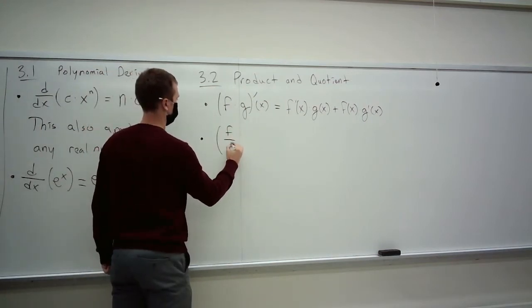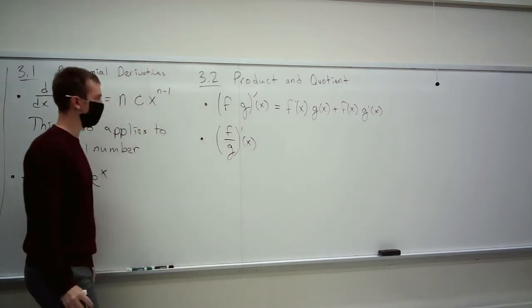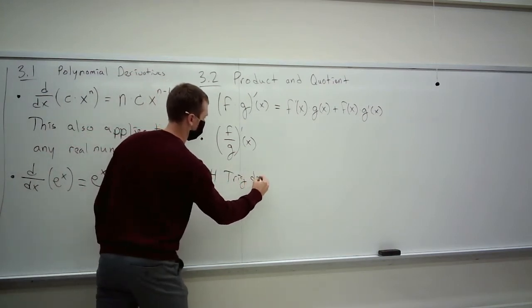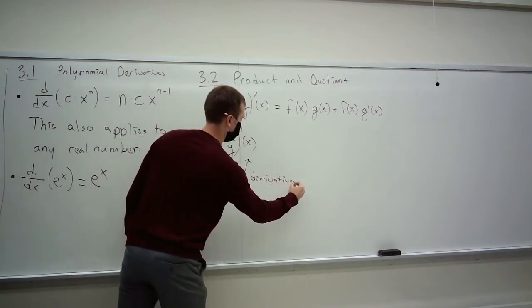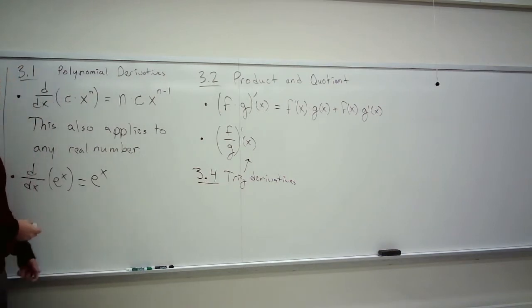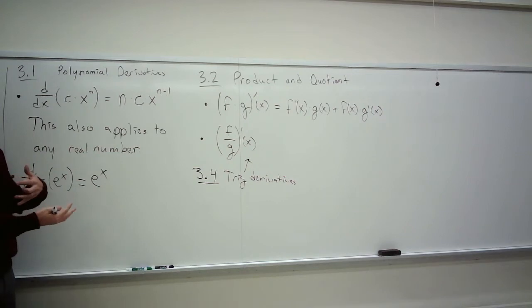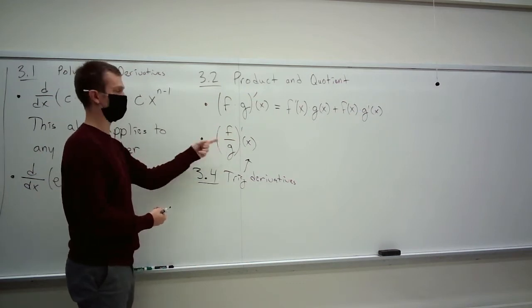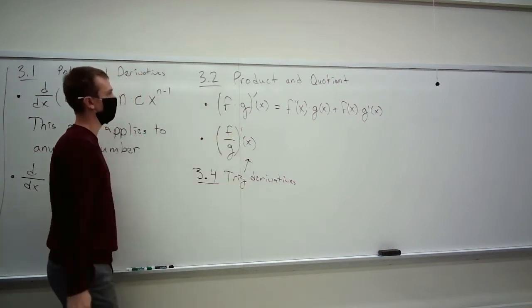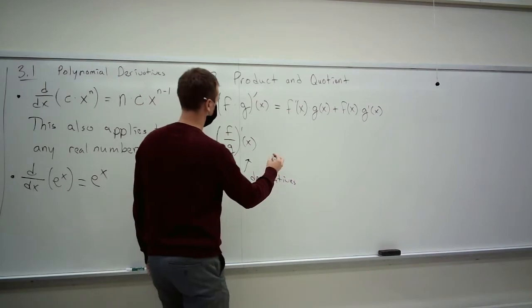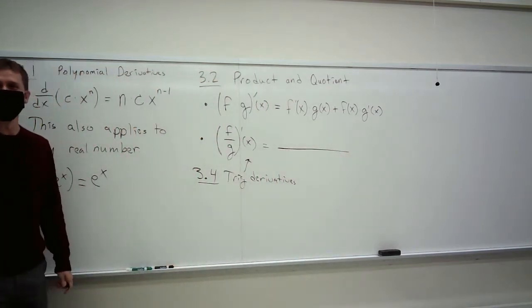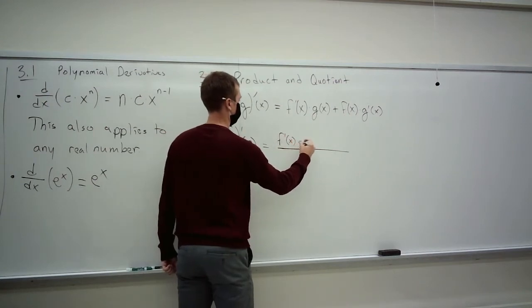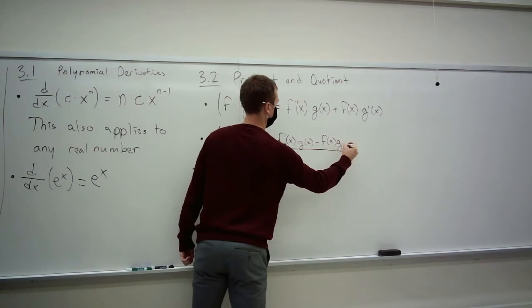This relationship, this formula that we have here, relates the slope of a product of functions with the slopes of each individual function. The slope of the product has to deal with the slopes of the individual functions. That's really what this is saying. And this is the exact way that it is determined. How do you find the slope, the derivative, of a quotient? We did oh so many examples of these, because all of 3.4, which is trig derivatives, basically is just this over and over and over again.